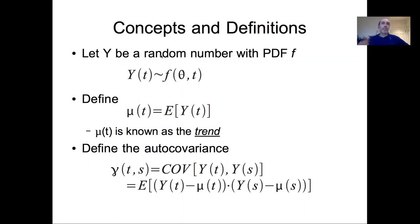From that concept of Y being a time series, a random number with some probability distribution f, let us define mu of t as the expected value of Y at that time. And in a time series, that mu is known as the trend.